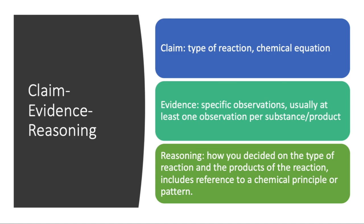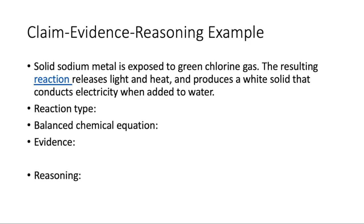In your lab report you're going to be asked to provide claim, evidence, and reasoning to support your conclusions. A claim is something like 'I think this is a single replacement reaction,' and the chemical equation is also a claim because you're saying these are the products of this reaction. Evidence is going to be specific observations — for example, when I put the glowing splint into this sample of gas it reignited, that would be good evidence for oxygen. Reasoning is how you decided on the type of reaction and the products, and it's going to include a reference to a chemical principle or a pattern. We'll show you a couple of examples — I'd like you to actually try doing this on your own first.